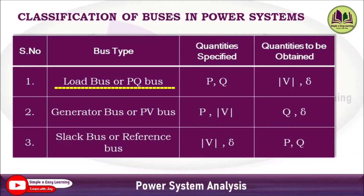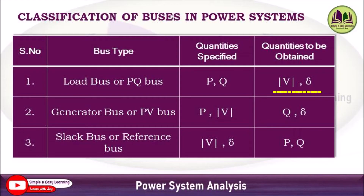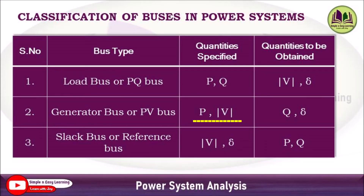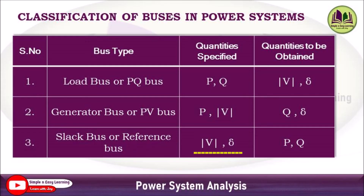To summarize, these three bus types can be represented as follows. The load bus or PQ bus has P and Q specified, and voltage magnitude and delta are to be obtained. The generator bus or PV bus has P and voltage magnitude specified, and Q and delta are to be obtained. The slack bus has voltage magnitude and delta specified, and P and Q are to be obtained.